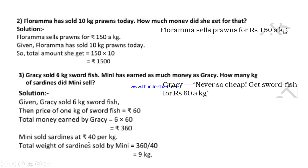Mini sold sadden fish at Rs. 40 per kg. Mini also earned the same amount — that is what is given here. So how do we find how many kg Mini sold? We have to divide. We are going to find the number of kg, so we divide because we have the total amount, Rs. 360, and the cost of 1 kg of sadden fish, which is Rs. 40. So we have to divide: 360 divided by 40.